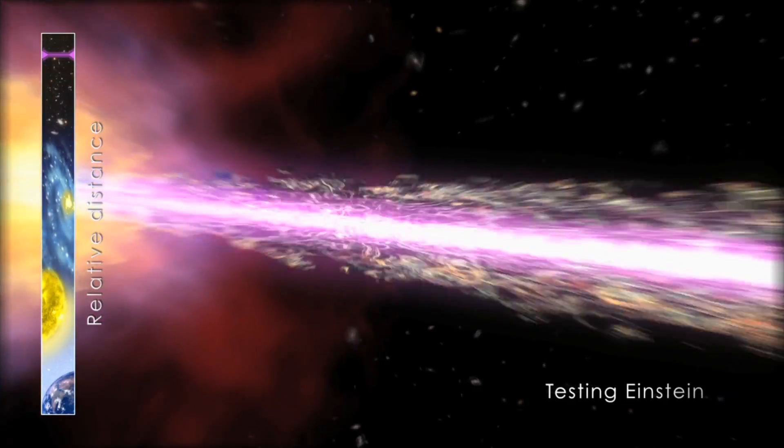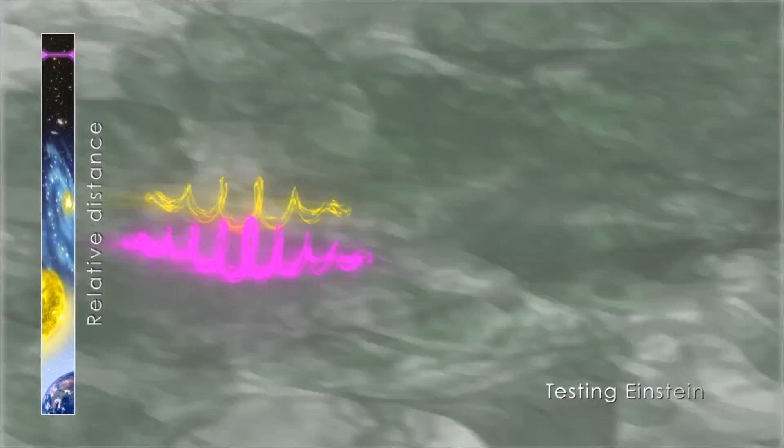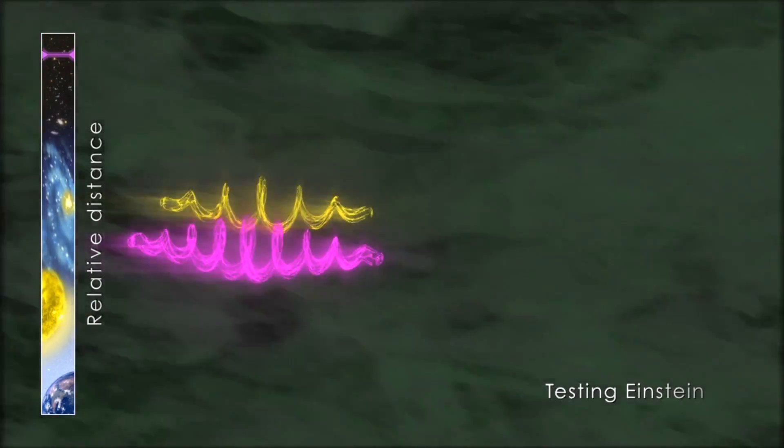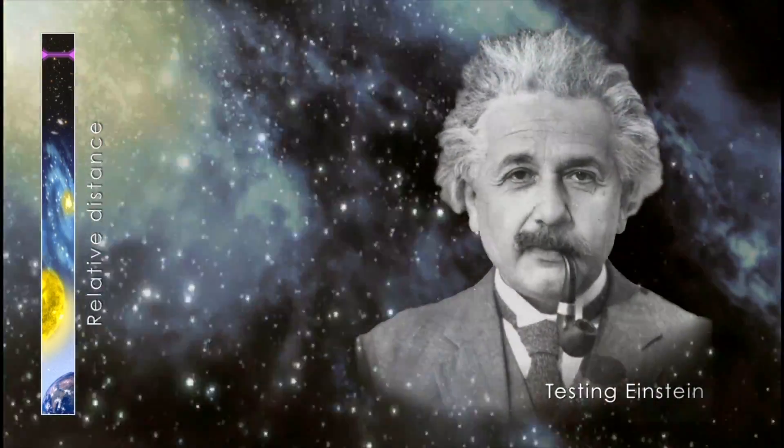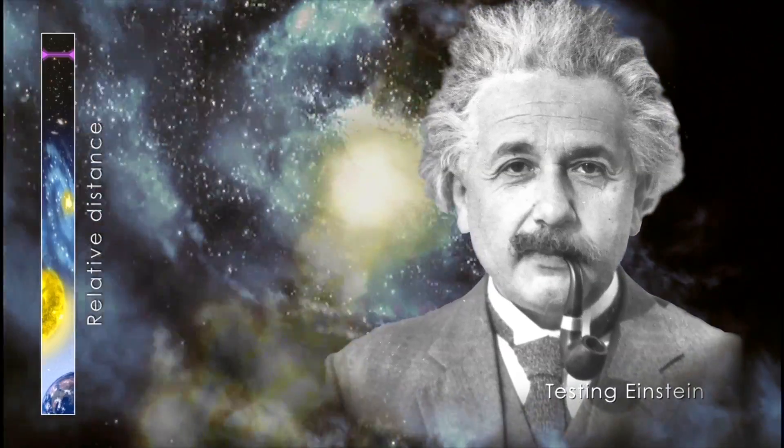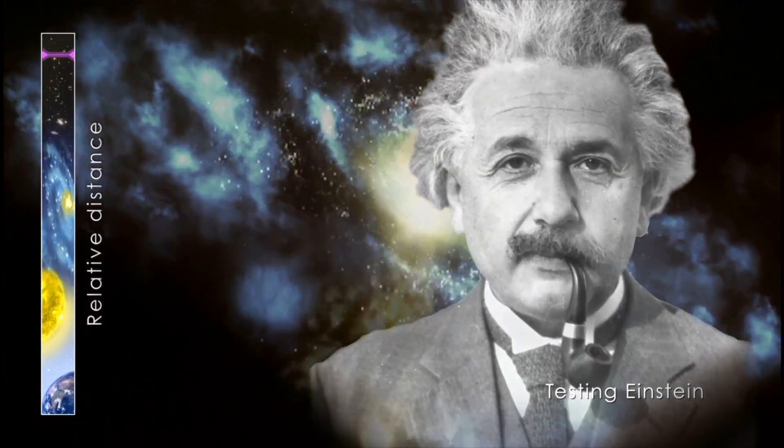Fermi looks at gamma rays, the highest energy form of light, and it surprised everyone with a discovery about the fabric of space and time. Because Fermi saw no delay in the arrival time of the two photons, it confirms that space and time is smooth and continuous, as Einstein had predicted.